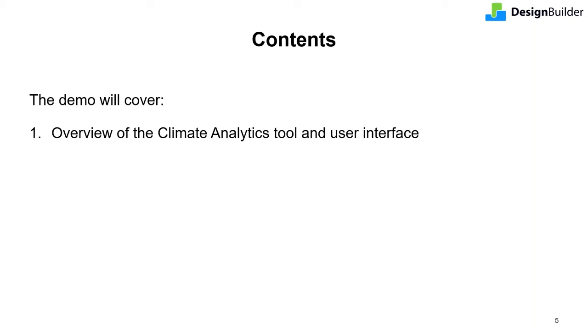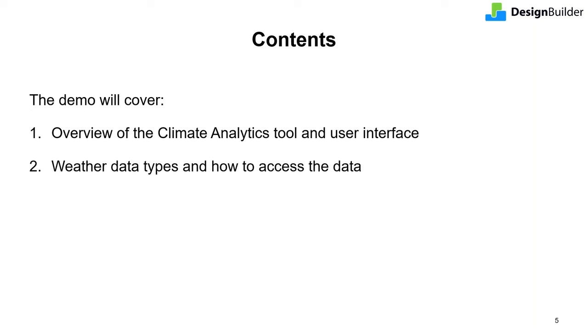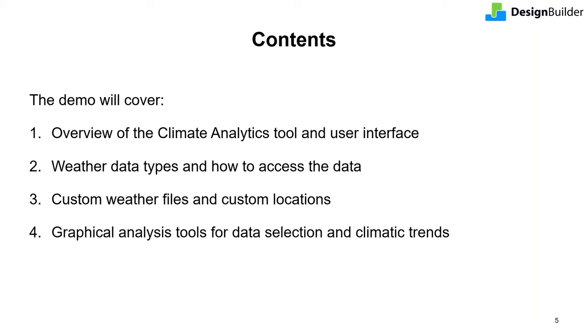Here's a quick overview of the presentation so you can see what will be covered. We'll start with an overview of the tool functionality, how to access it and the main elements of the user interface. Followed by a review of the three main weather file types and how they can be downloaded. Then I'll move on to talk about creating weather files for custom locations, and also customising weather files by modifying them to account for future climate, urban heat island effects and extreme weather scenarios. I'll show you how to use the graphical data analysis tools, and finally we'll look at how to access data from external sources such as Climate.1 Building, EnergyPlus and White Box Technologies, as well as some official national data.